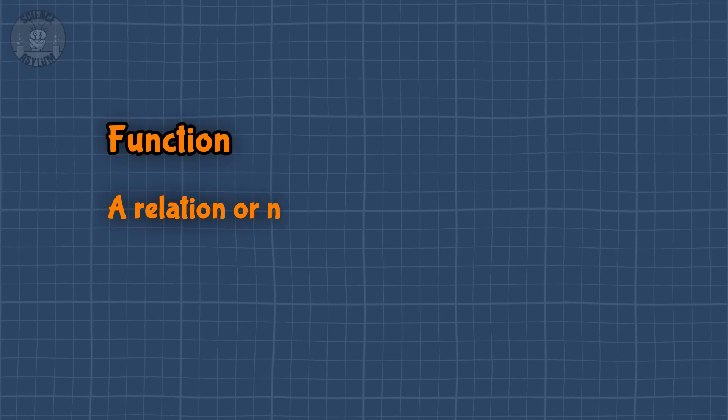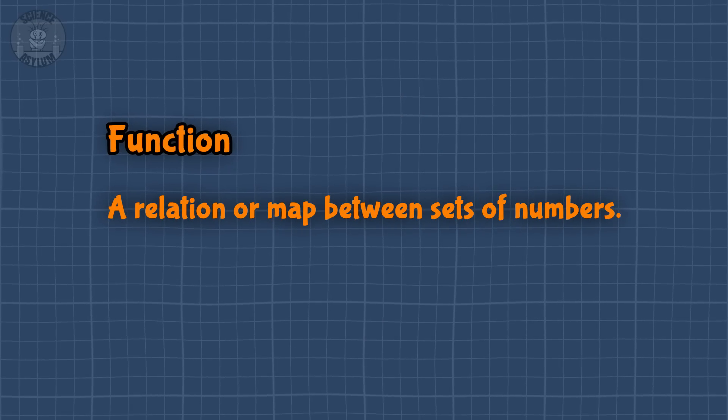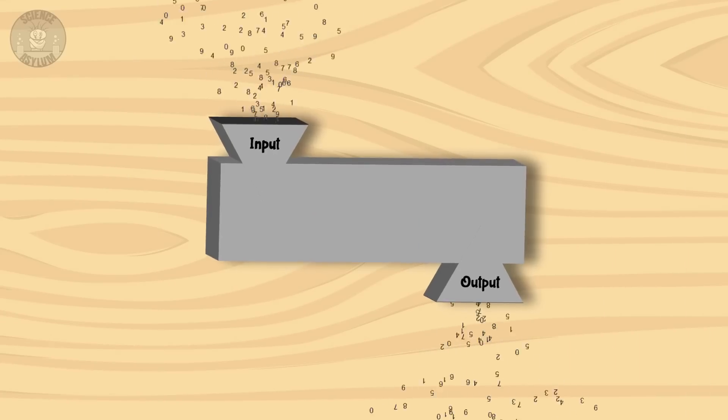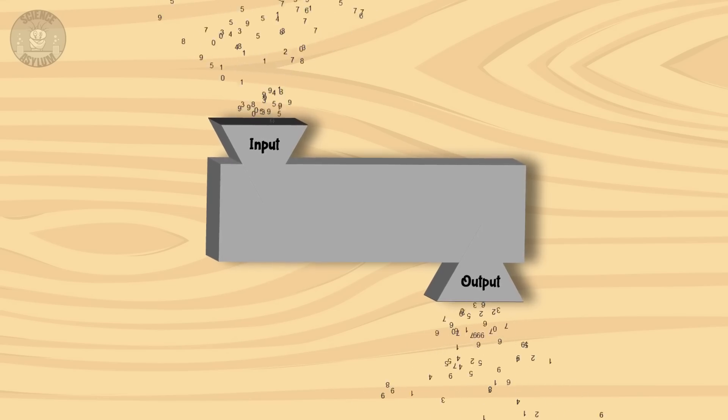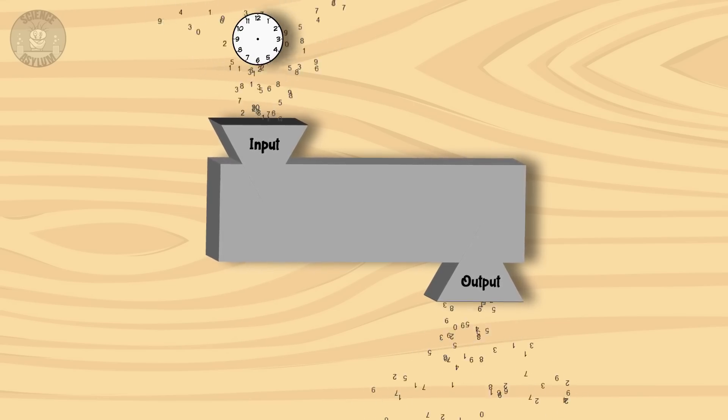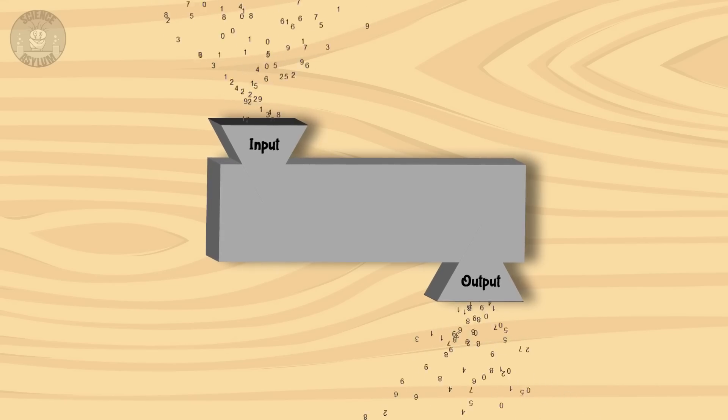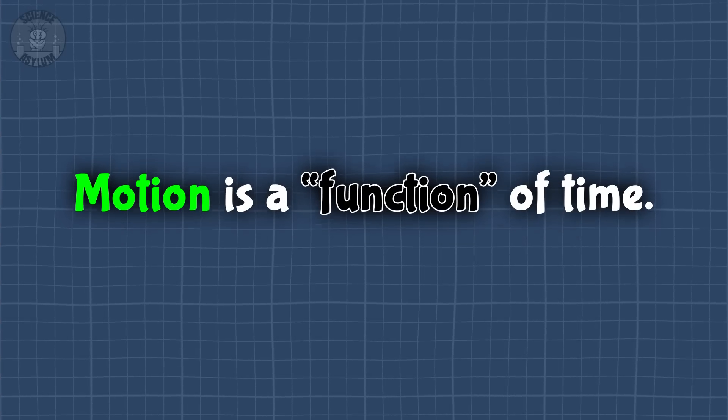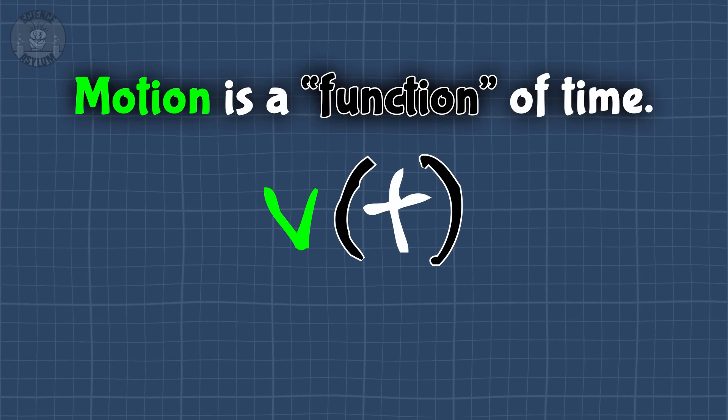By that, we mean a mathematical function, which is a relation or map between sets of numbers. But that's a bit abstract. It's easier to think of a function like a little mathematical machine. You put numbers in, like maybe time or something, and you get numbers out that depend on that input, like the motion of a squirrel. We'd say that motion is a function of time or just V of T for short.